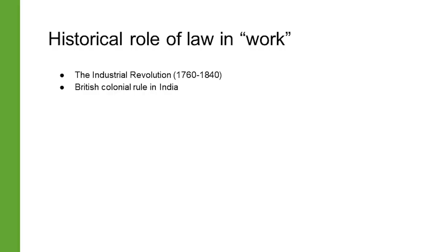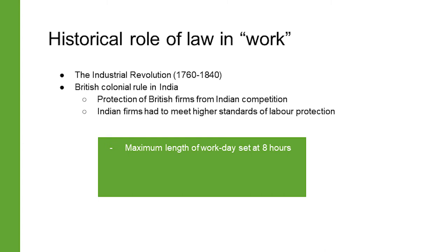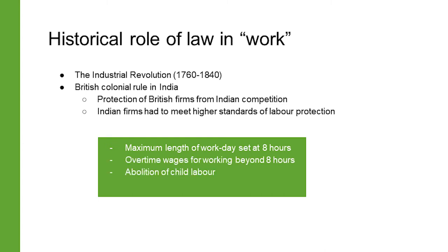Protecting British industry from competition from Indian firms was an important consideration for the British parliament, which often set even higher standards for Indian firms to meet. The Factories Act, first introduced in 1883, stipulated overtime wages beyond eight hours of work, abolished child labor, and restricted women from being employed at night.